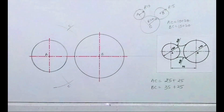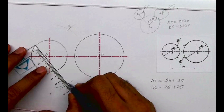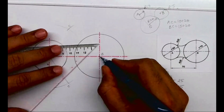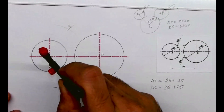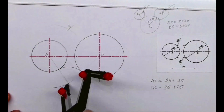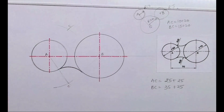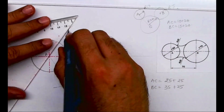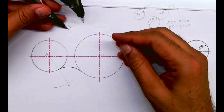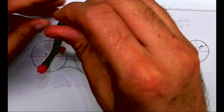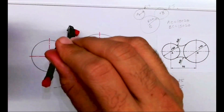Let's take this intersection as point C. If I want to be very accurate, I can join C to A and B to C to get the exact points where the arc starts. This is how you get the exact tangent points. You can also directly draw radius 25 without these lines, but there may be a slight error. Drawing the connecting lines gives a more accurate result.